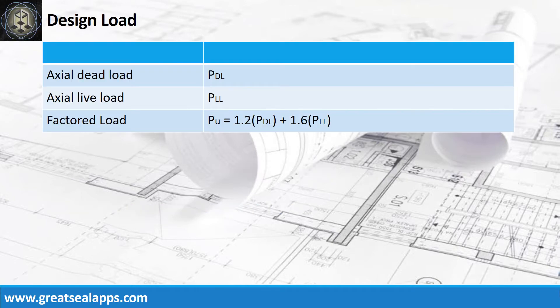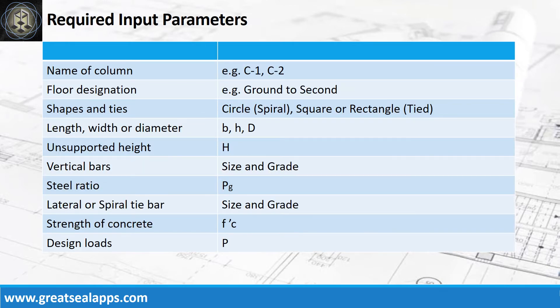Get the factored load from actual dead load and actual live load. Enumerate the input parameters required: name of column like C1 or C2, floor designation like ground to second, shape and ties, column size like length, width, or diameter, unsupported height, vertical bars with size and grade, steel ratio, lateral or spiral tie bars with size and grade, strength of concrete, and design loads.